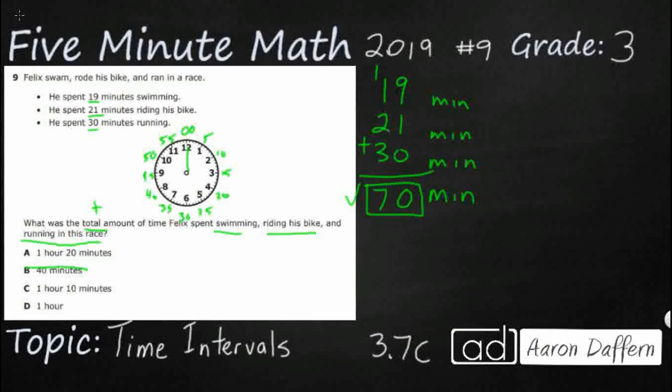So if I'm going to start at o'clock, and I want to go to 70 minutes, let's see what I have here. I've got 5, 10, 15, 20, 25, 30, 35, 40, 45, 50, 55, 60. I'm going to stop right there.